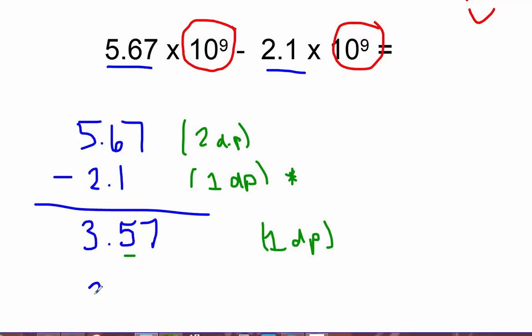When I'm rounding, I'm looking to the next number. 7 is a larger number than 5, so we can go ahead and round that up to 3.6. And we're almost done. We just don't want to forget about our power of 10. So now we're going to go ahead and bring that times 10 to the 9 down into our answer. And there's our final answer. It's got the right number of sig figs, and the math was pretty easy to do.